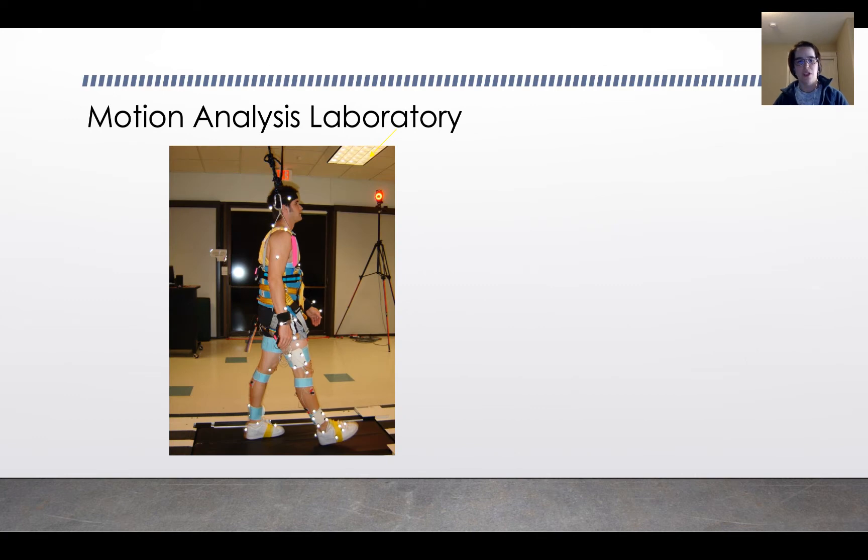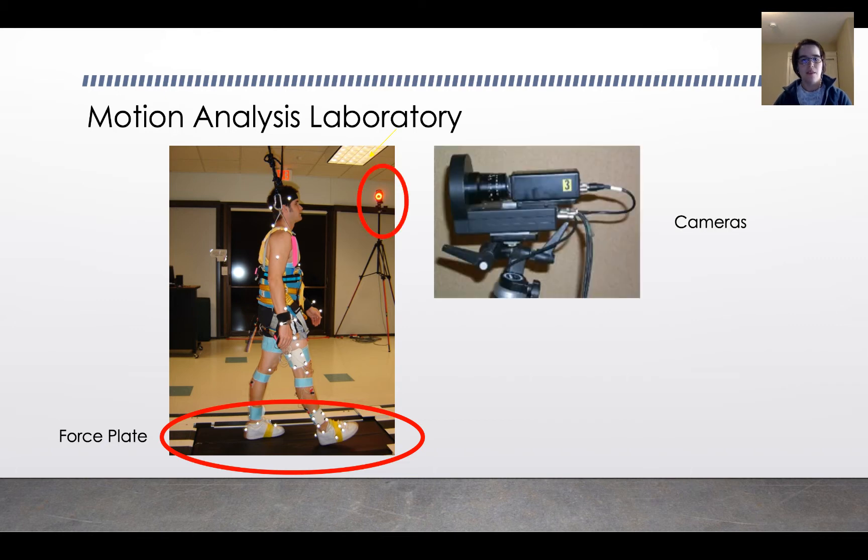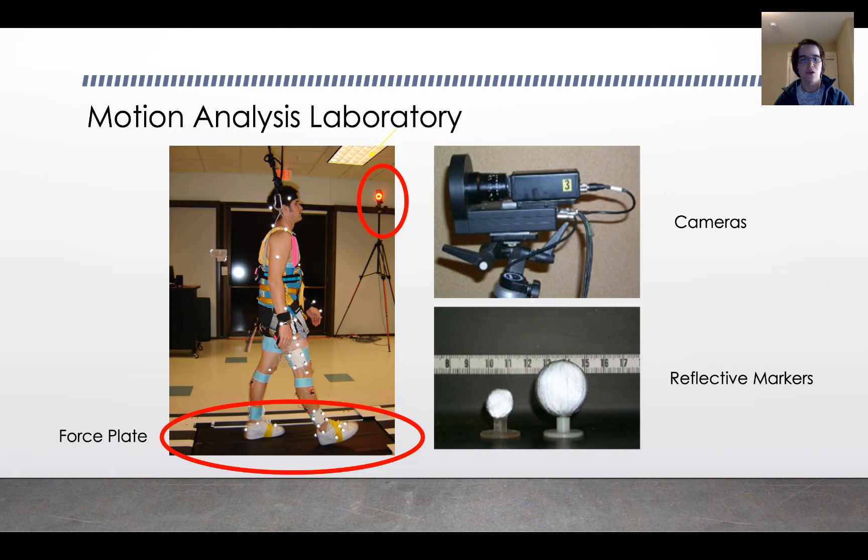So to do that, we use a motion analysis laboratory. This is a picture from a motion analysis laboratory. There are a couple consistent features no matter what laboratory you're using. One is some sort of force plate, a device in the floor that measures the forces between the person and the environment. There's a camera or set of cameras that track the position of reflective markers located all over the person. You can see the little reflective balls in the image. The balls are pretty small, one to two centimeters in diameter.